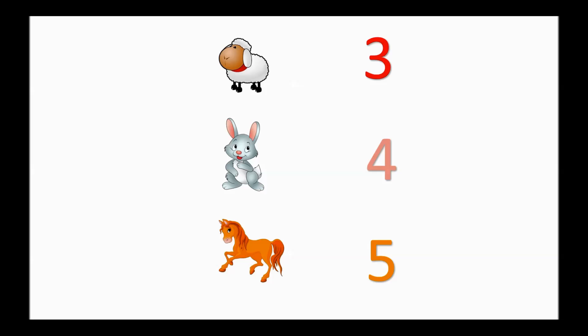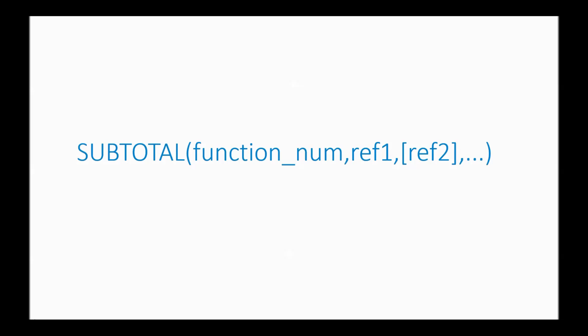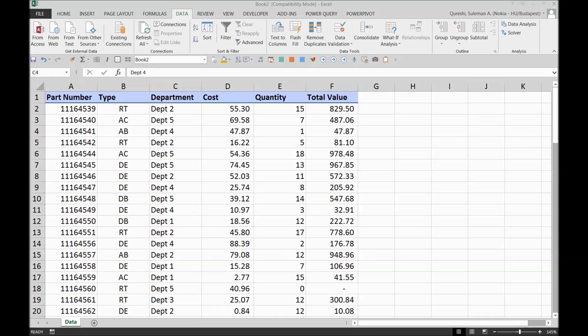To understand the subtotal syntax: it's SUBTOTAL, then a function number — the function number tells Excel whether you want to sum, count, average, and so on. Then there's a reference, which is the range of cells you want to perform the function on. Since this gets a bit technical, I'll go back to Excel and explain it there rather than going into textual definitions.